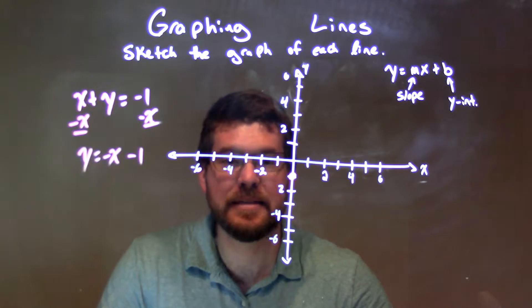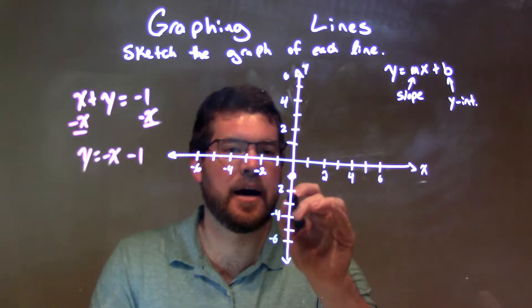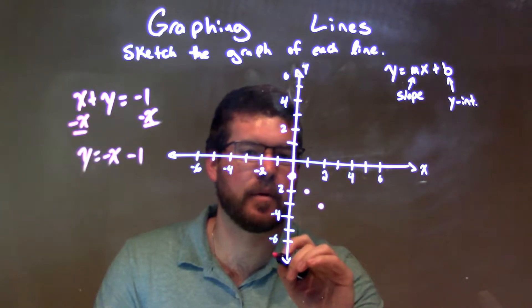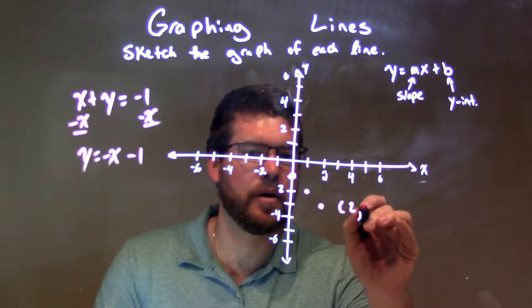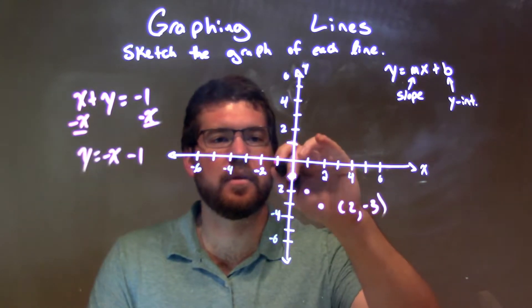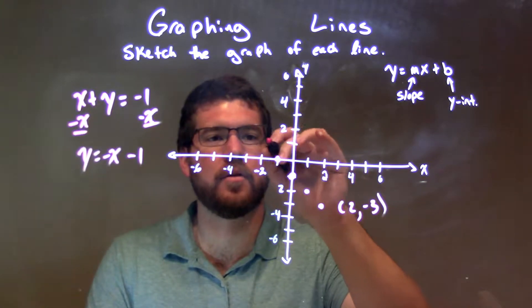And then our slope is negative 1 as well. It goes down 1 over 1 to the right, and down 1 over 1 to the right. So this last point here is 2, negative 3. We also go up 1 to the left 1, up 1 to the left 1.